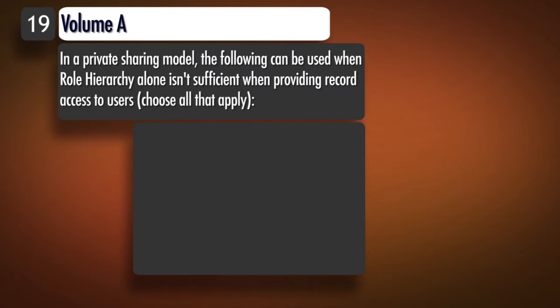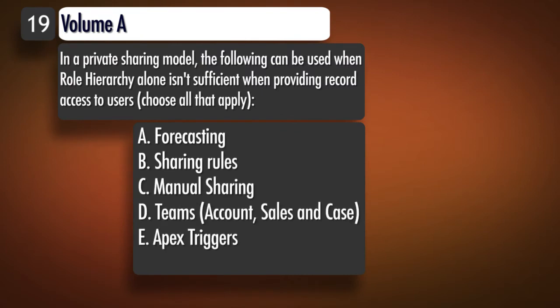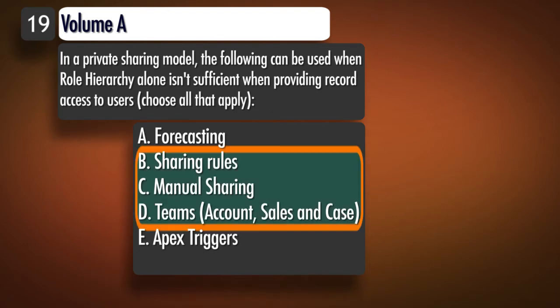Question 19, Topic 1: In a private sharing model, the following can be used when role hierarchy alone isn't sufficient when providing record access to users — choose all that apply. A. Forecasting. B. Sharing rules. C. Manual sharing. D. Teams — account, sales, and case. E. Apex triggers. Correct answer: B, C, D.